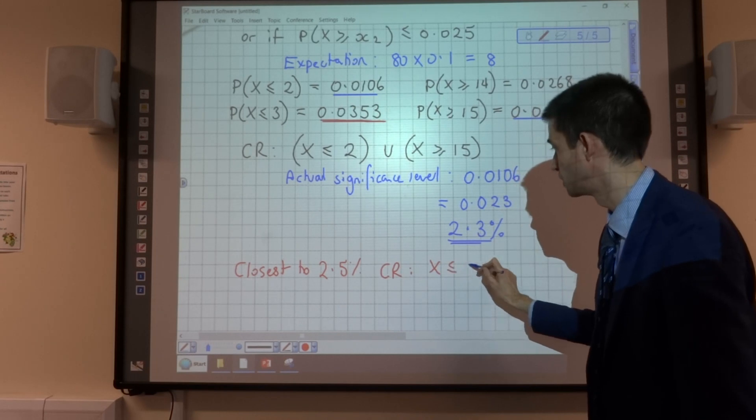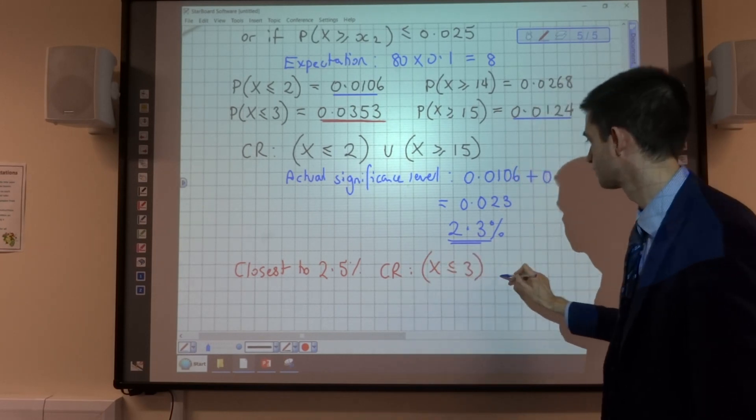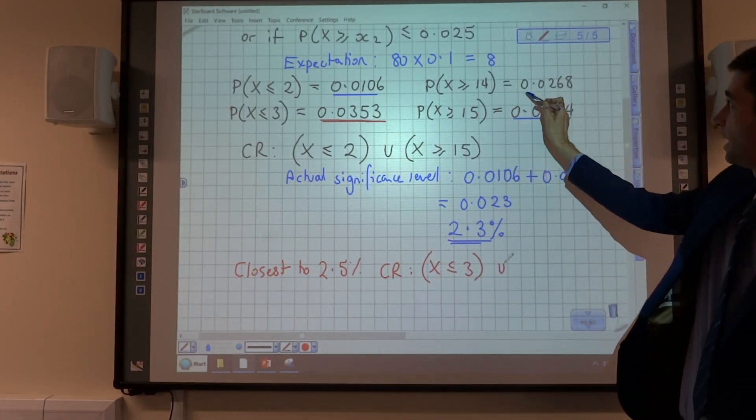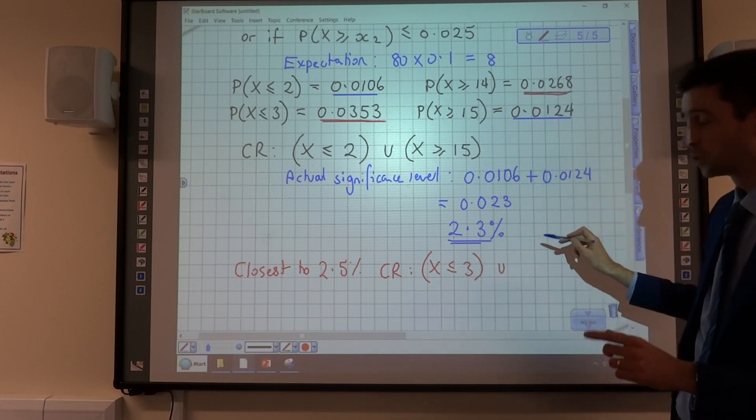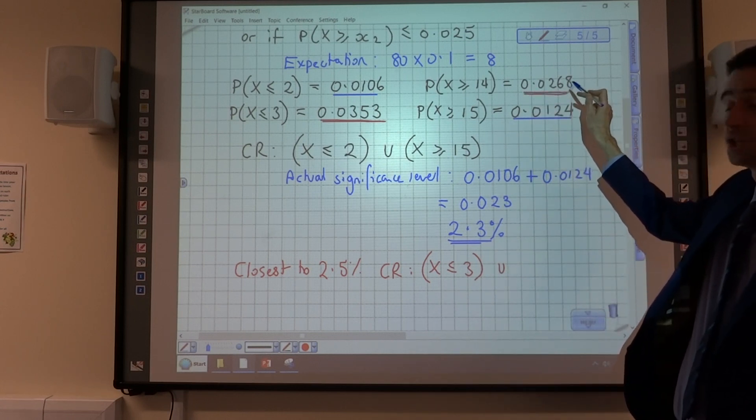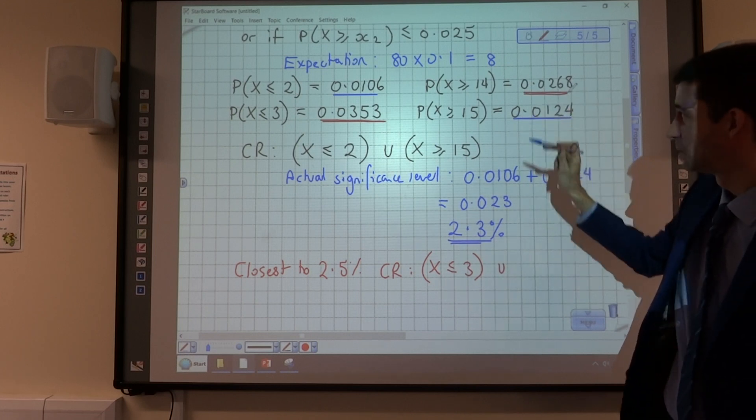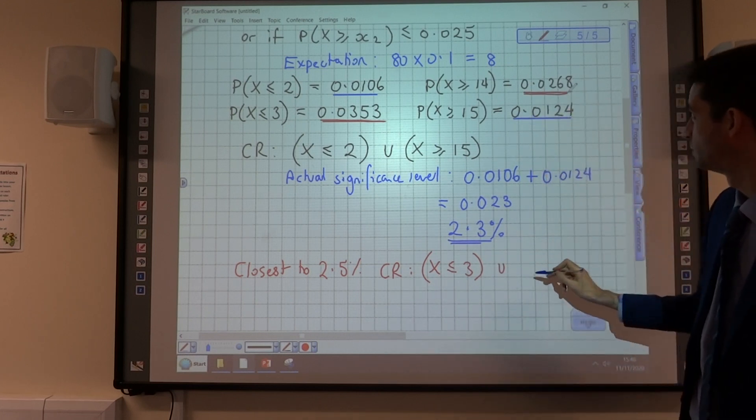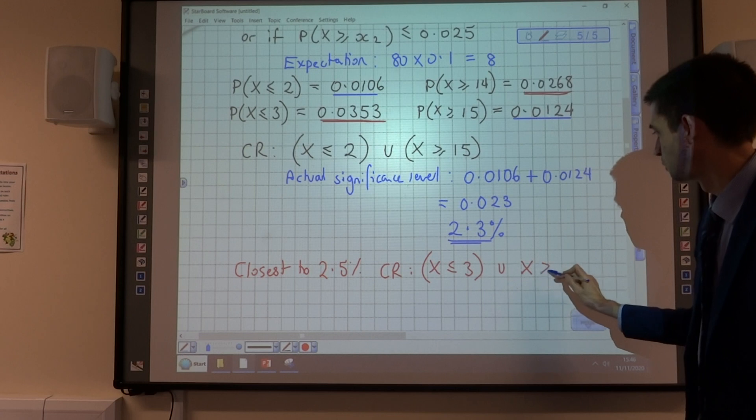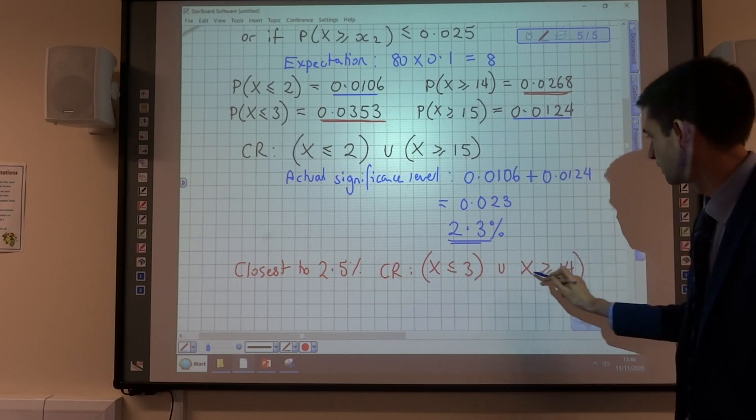So, if we were going closest to 2.5% that we could, then our critical region would actually be X is less than or equal to 3, or X is greater than or equal to 14, because that probability there is closer to 2.5% than the one for X being greater than or equal to 15. So our critical region would become less than or equal to 3, greater than or equal to 14.